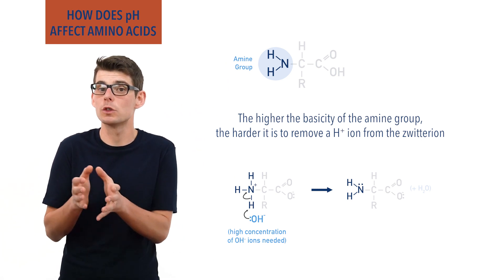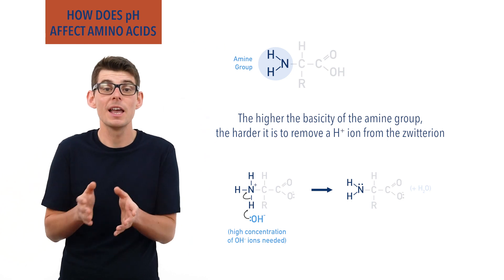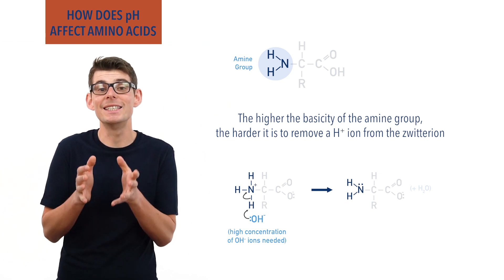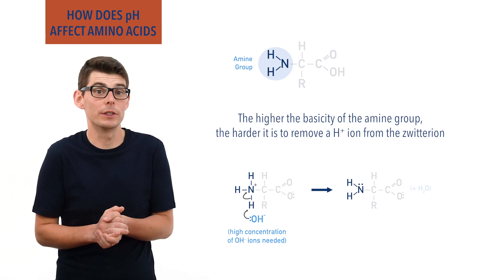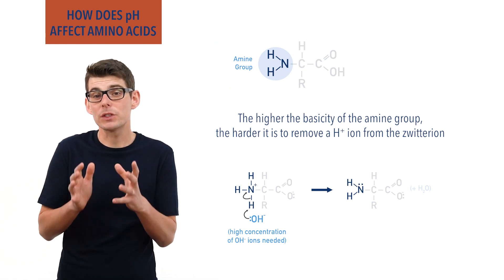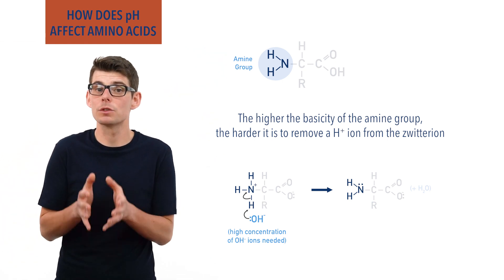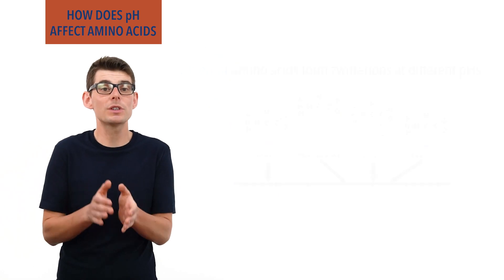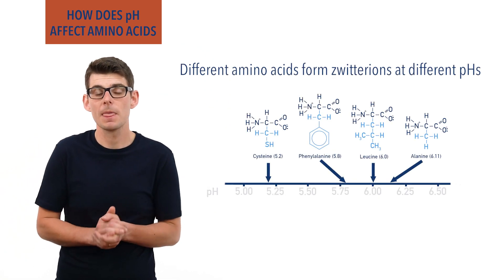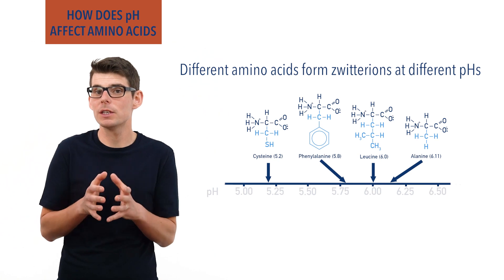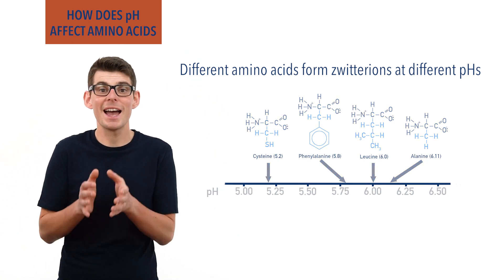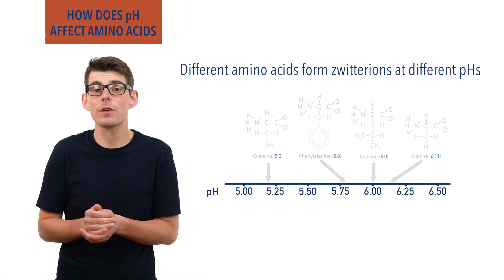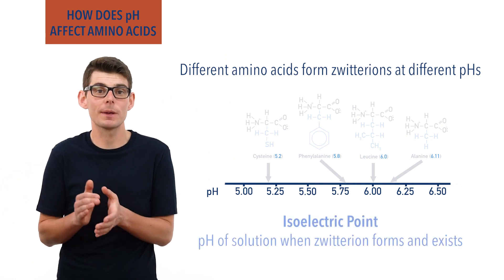This is why different zwitterions will release H+ ions from the NH3+ groups at different pHs in alkaline solutions. This also means that zwitterions form at different pHs for different amino acids. The pH at which the amino acid forms a zwitterion and exists with no overall charge is sometimes referred to as its isoelectric point.